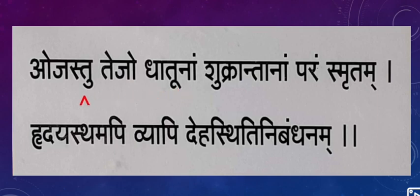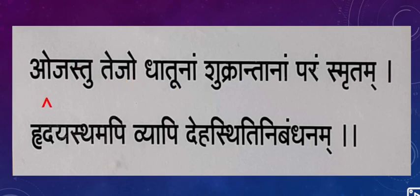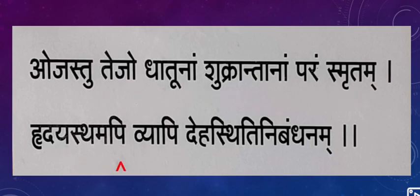'Tejo dhatu naam' - tejo means sara bhag. Oj astu tejo dhatu naam - dhatu naam means jo Rasa se lekar Shukra tak jo bhi dhatu hai - sat dhatu: Rasa, Rakta, Maans, Meda, Asthi, Majja, Shukra - in sabhi dhatu ka tejo bhag, sara bhag hota hai. Isi ko hum bolte hain Ojas. Yeh Shukra ke baad banta hai.